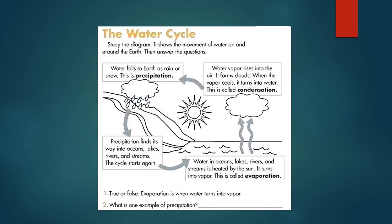Then you can answer the two questions at the bottom. If we start off first at picture number A, where water in the oceans, lakes, rivers and streams gets heated by the sun — as it gets heated by the sun, it turns into a vapor. This is called vaporization or water vapor or evaporation. The water vapor rises into the air and forms clouds. When the vapor cools, it turns into water, and this is called condensation.